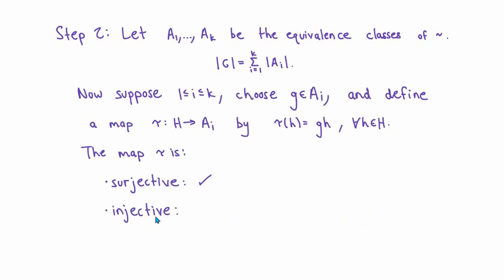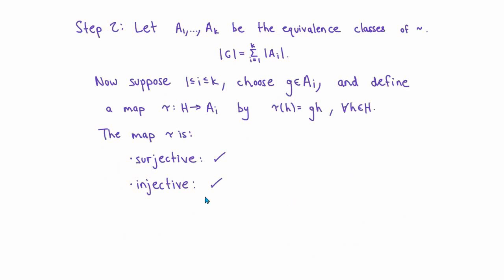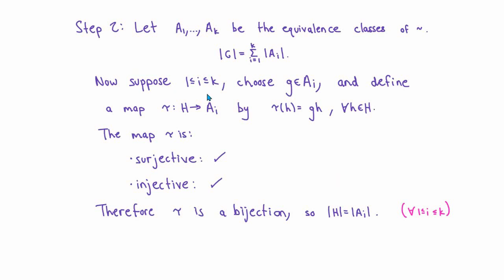Now let's prove injectivity, which is easy. Suppose h and h' are elements of H with τ(h) equal to τ(h'). By definition of τ, that means g times h equals g times h'. By the cancellation law in the group, h must equal h', so the map is injective. Since τ is both surjective and injective, it is a bijection, which means the cardinality of H equals the cardinality of Aᵢ. Since the role of i is completely arbitrary, all equivalence classes have the same cardinality, equal to the cardinality of H.